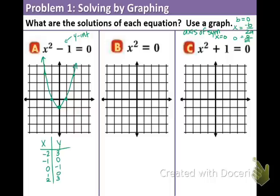So the question was, what are the solutions of each equation? Remember, solutions are x-intercepts. Well, this first graph crosses through negative one and positive one. So there are two solutions, and they are x equals negative one and x equals positive one.